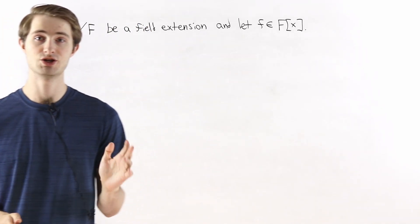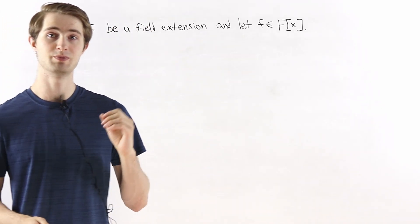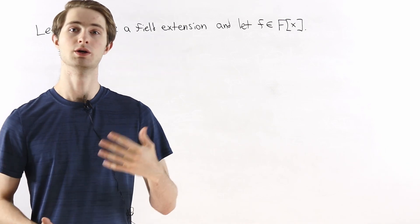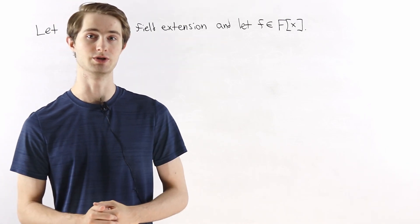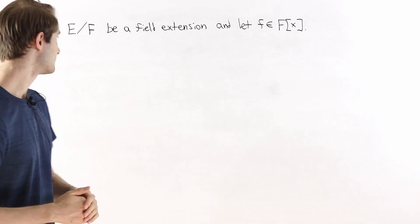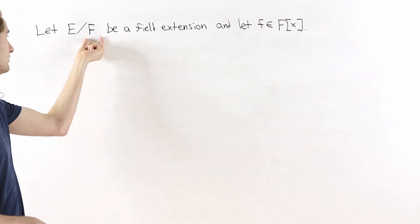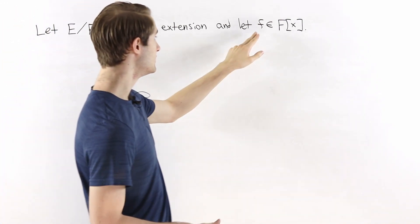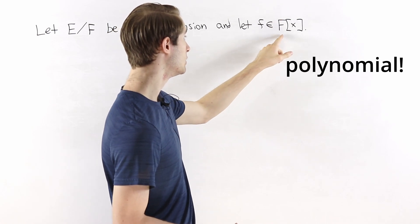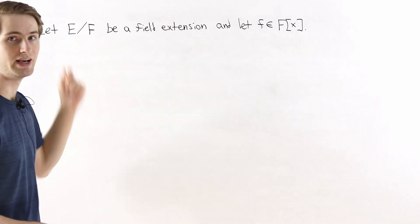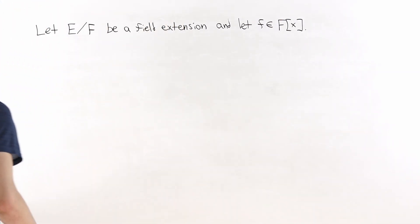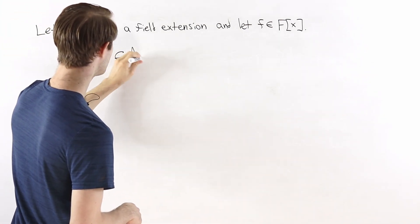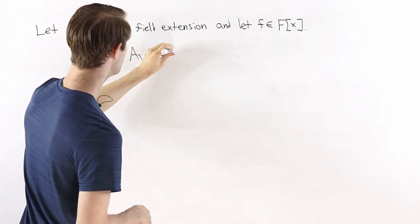We are going to prove that field extension automorphisms map roots to roots. A special case of this is that the Galois group will map roots of polynomials to other roots. Let's look at the setup. We start with some field F and an extension field E, and we consider a polynomial f which has coefficients in the base field F. We will consider an element phi that is in the automorphism group of E over F.